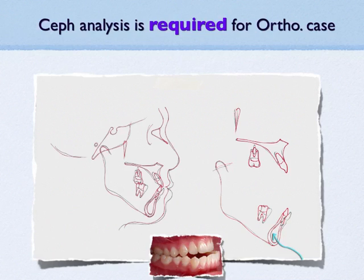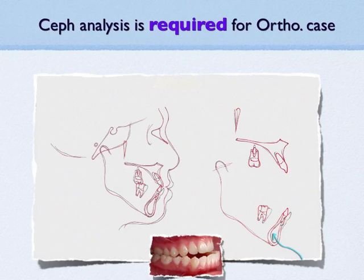This is a requirement for the orthodontic case, but not required for the implant case. For orthodontics, we always want to know the difference between pre-treatment and post-treatment, and the cephalometric superimposition is a good tool to evaluate that.